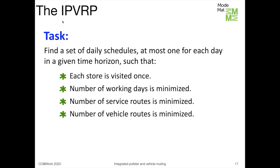Now we are ready for stating our problem formally. The integrated pollster and vehicle routing problem is the following: find a set of daily schedules, at most one for each day in a given time horizon, such that each store is visited once, the number of working days is minimized, the number of service routes is minimized, and the number of vehicle routes is also minimized.